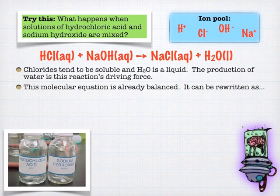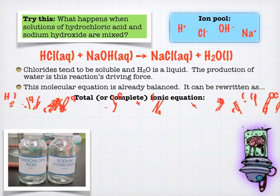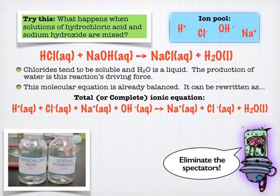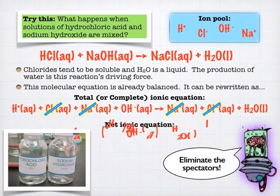Now we can tease this out into a total ionic equation. Again, this one's super easy because it's kind of balanced. And so we can tease out all the ions of the aqueous things. And then we can, of course, cancel the spectators. And as I said before, we will end up with the classic net ionic equation for a neutralization reaction. And that is hydrogen plus hydroxide yields water.